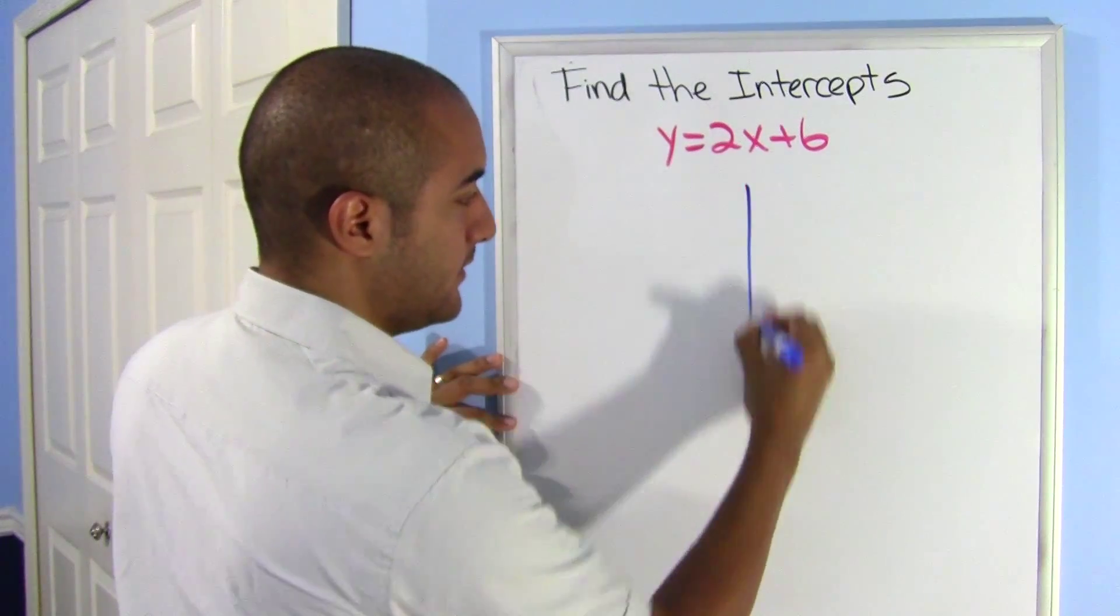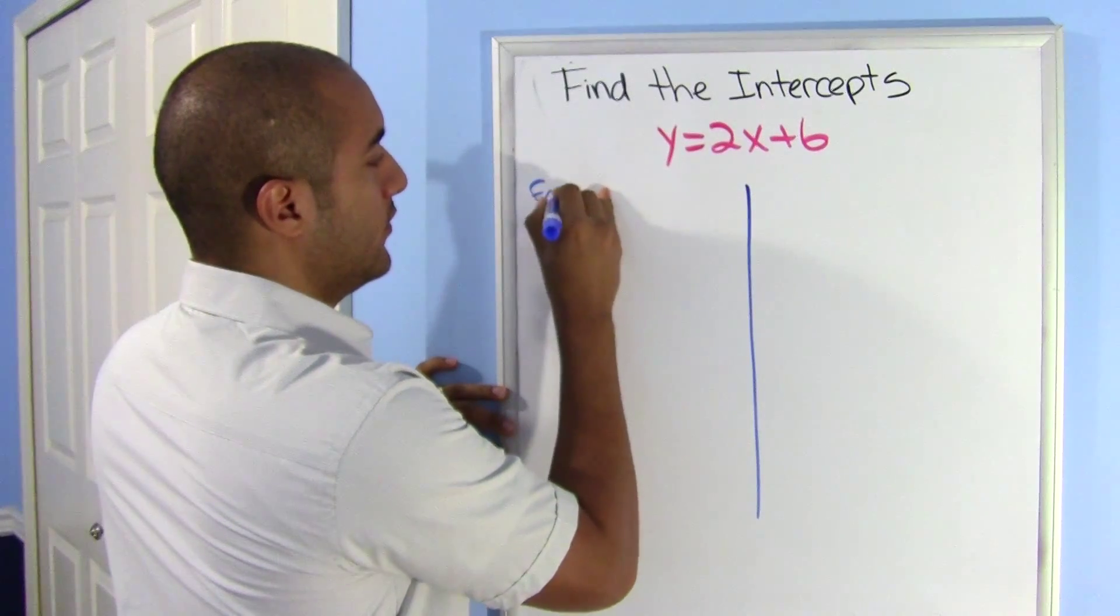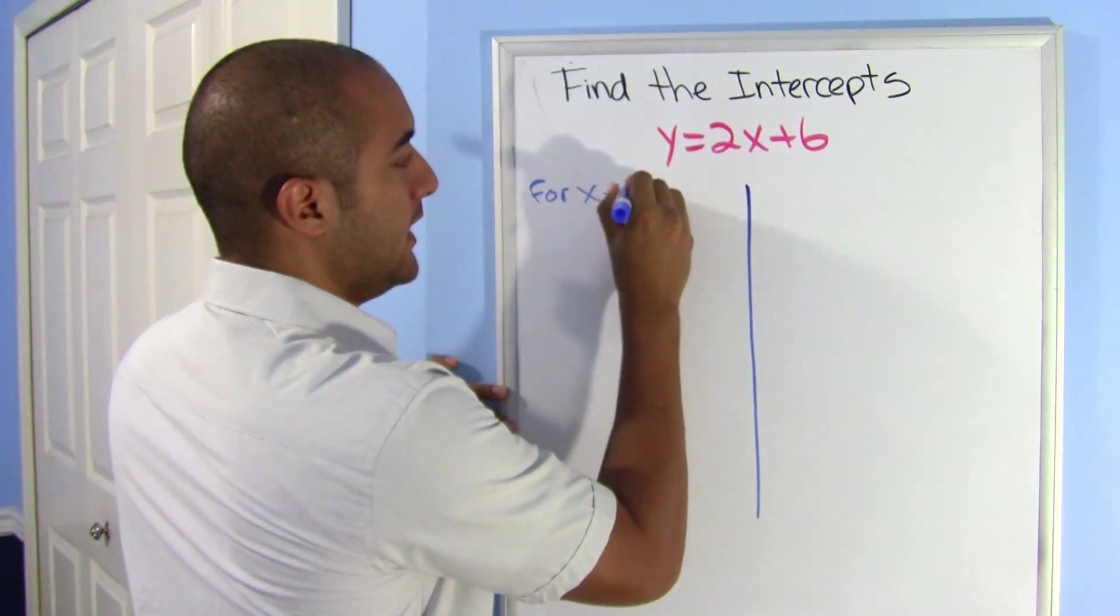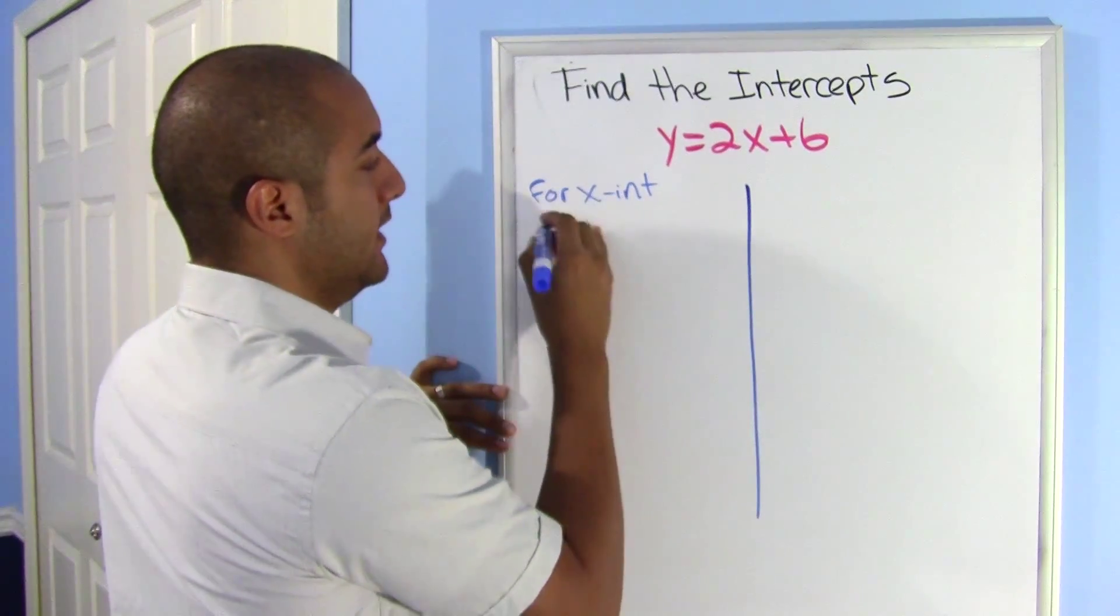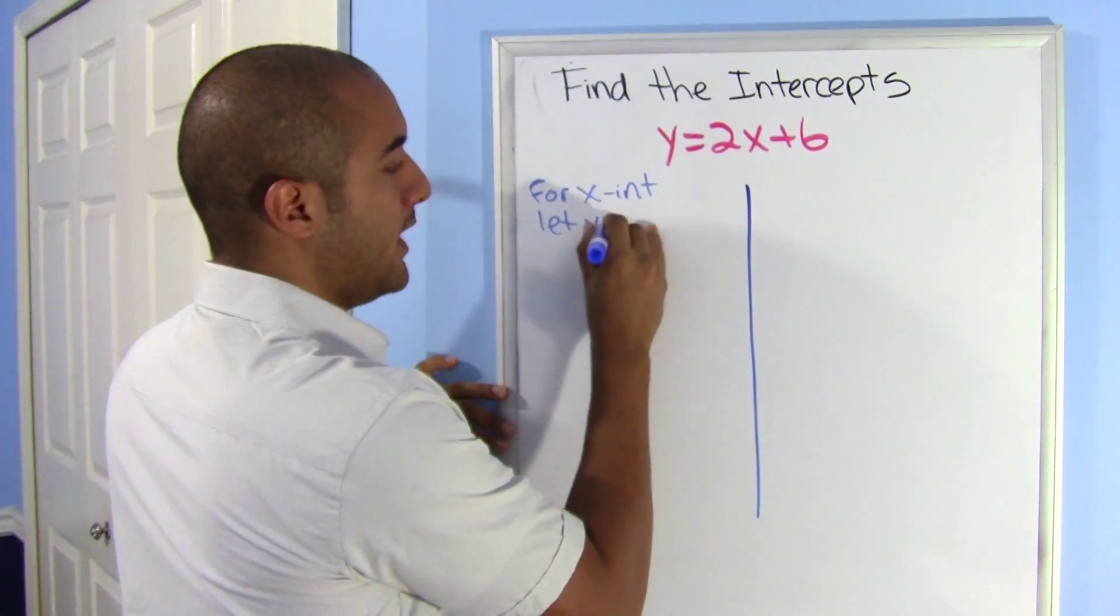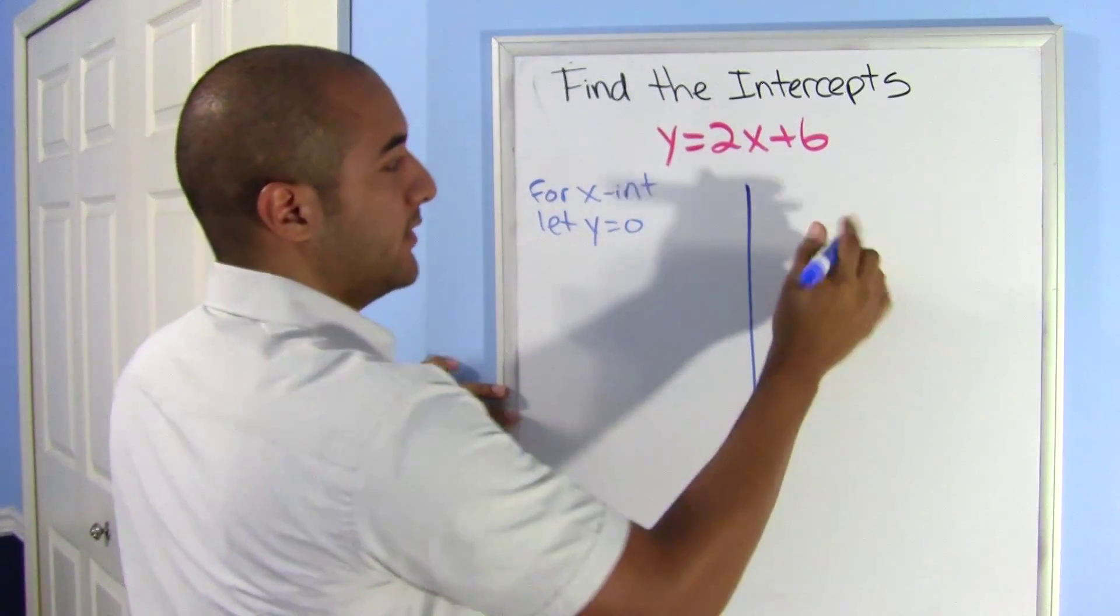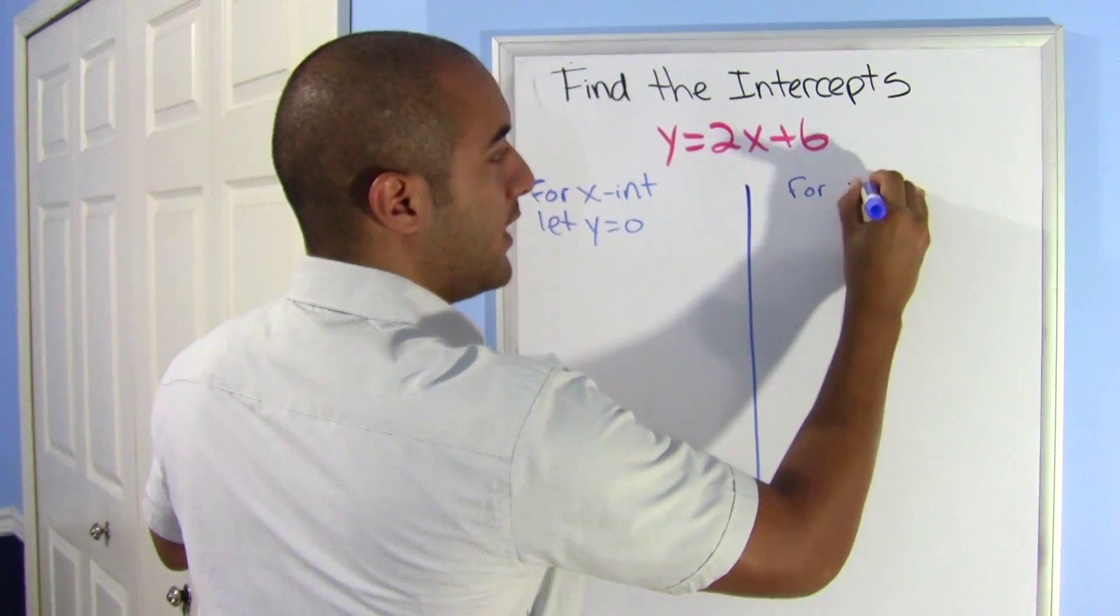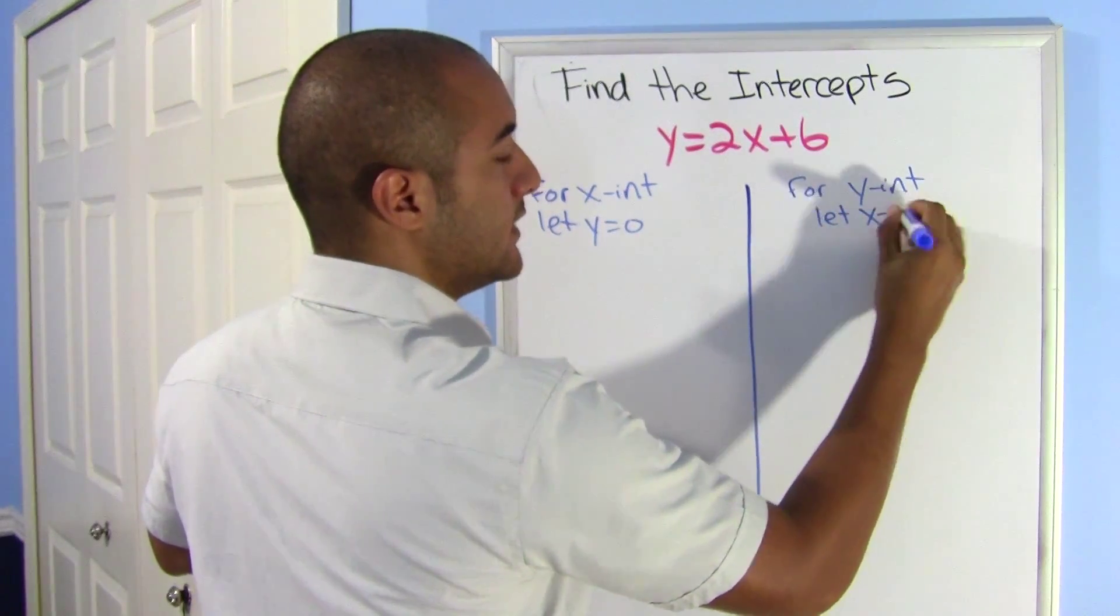Usually I split my problem into two and I say this: for x-intercept, where it crosses the x-axis, let y equal 0. And here you can kind of guess what I'm going to write. For y-intercept, let x equal 0.